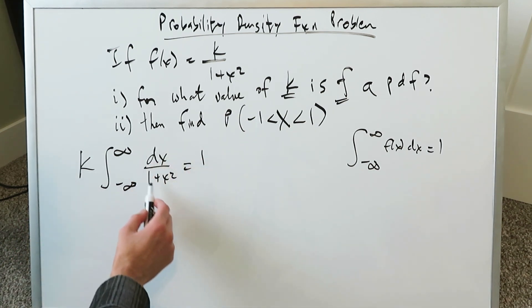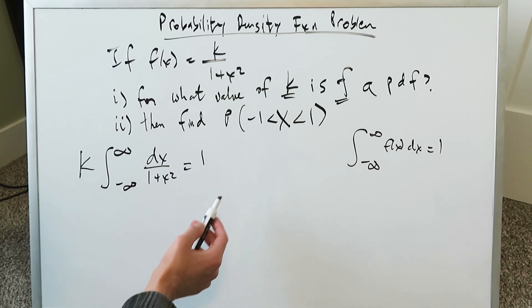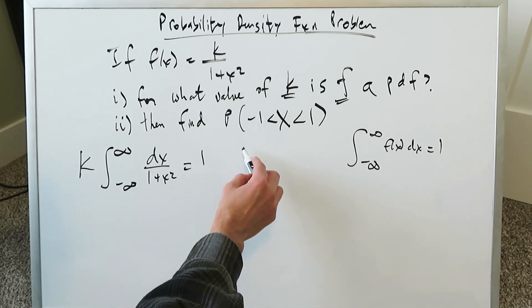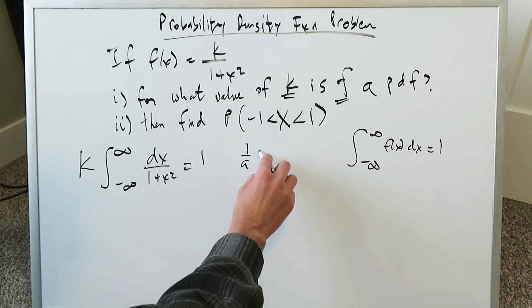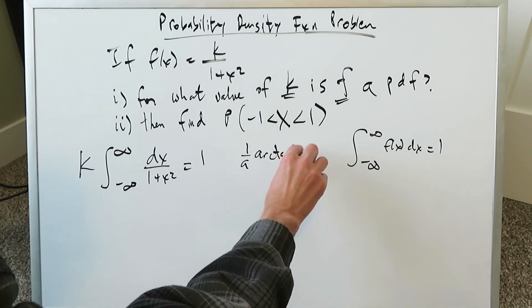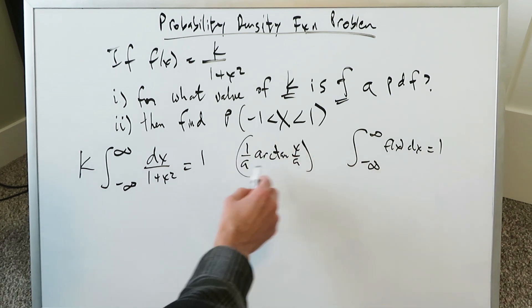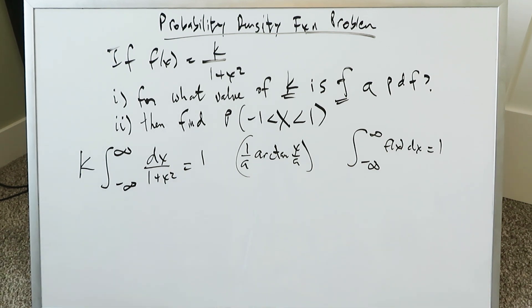That k can be pushed outside and you can do a dx over 1 plus x squared, and you know all of this definite integral should equal 1. When you're looking at this, you can do a trigonometric substitution, bring in the tan and the secant. You don't have to do that. You can just do the arctan antiderivative. You know it has a template 1 over a, arctan x over a for anything which has this type of appearance.